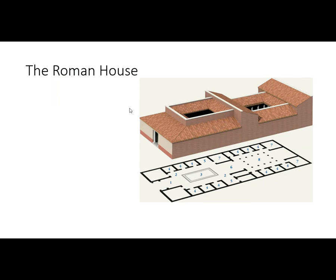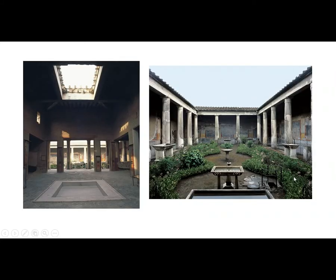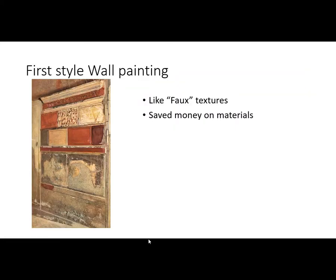Everything in Pompeii is frozen in domestic situations. We have whole houses with everything that was in them and all the paintings on the walls. We don't have a lot of paintings up until now — we saw the palace at Knossos, but we hardly have many Greek paintings. So here we have Roman paintings. A typical house would have an atrium with an opening for rainwater, a peristyle — a little courtyard — and then all the domestic rooms. They found a way to manipulate architecture so they could have water and manage it.